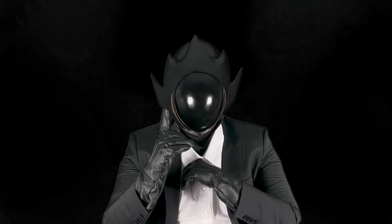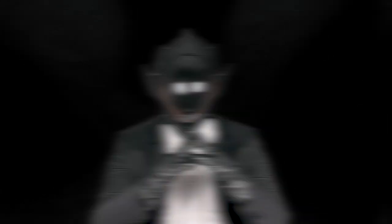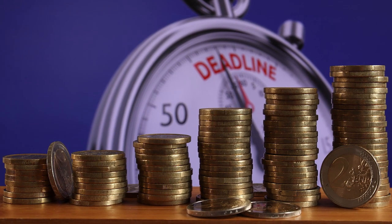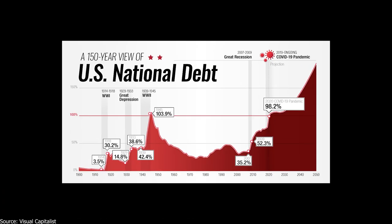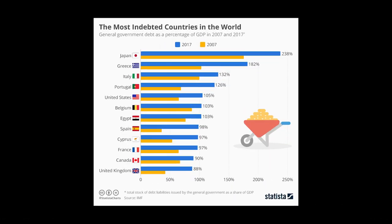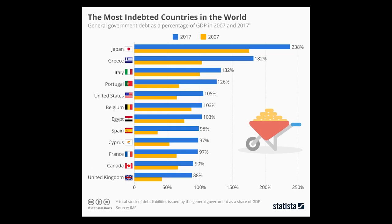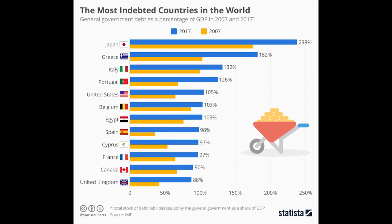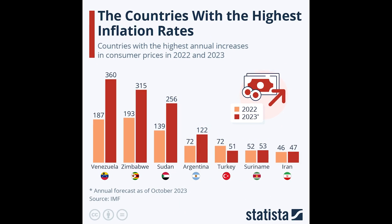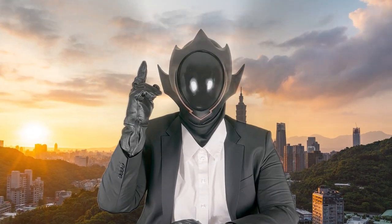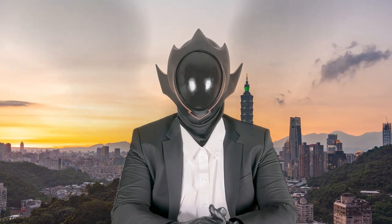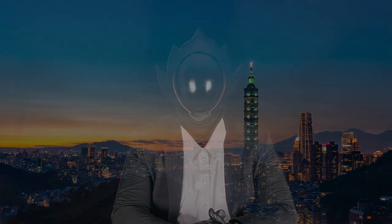An often overlooked aspect is the nature of modern money as debt. Today's money system is heavily based on credit and debt, creating a complex interplay between financial growth and debt accumulation. This debt-based system has profound implications on economies, influencing everything from inflation to interest rates and even economic cycles — understanding this is crucial to grasp the full picture of our current monetary system.